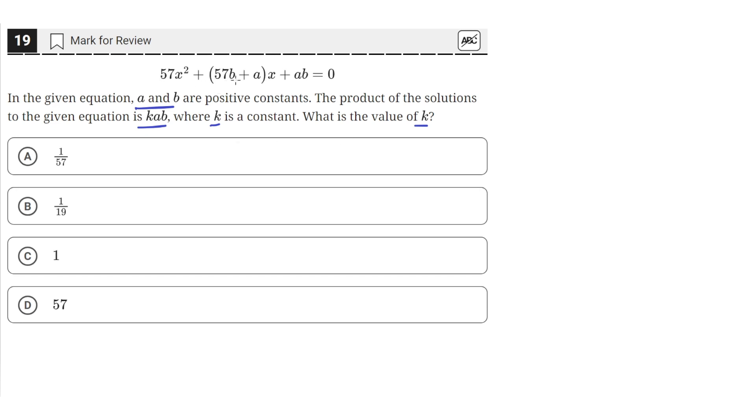So we're given this equation here, let's expand this out. We'll have 57x² + 57bx + ax + ab = 0.